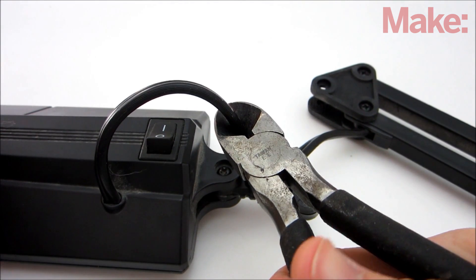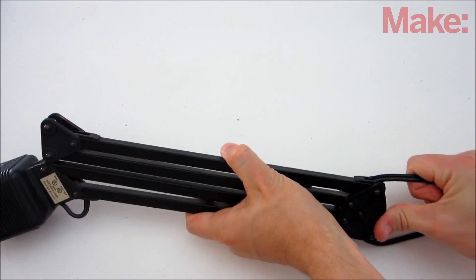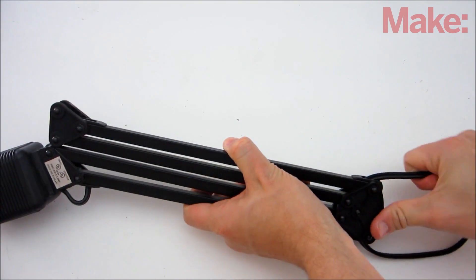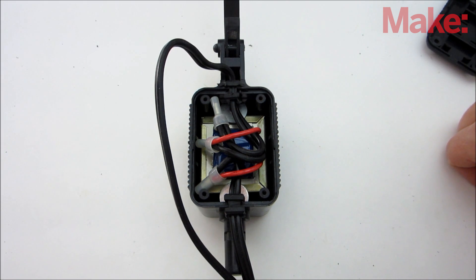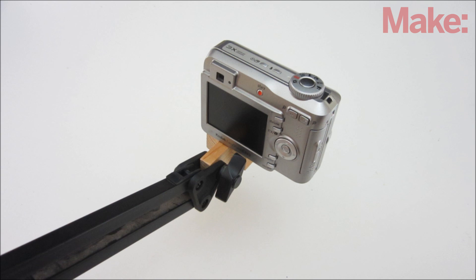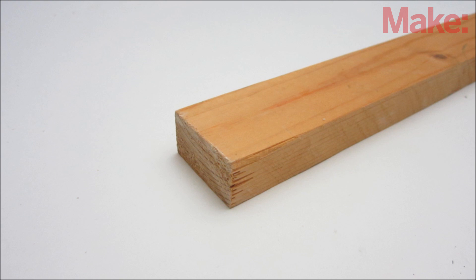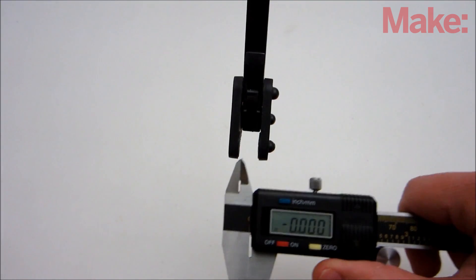If there are any electrical components in the base of the stand, you can either remove those or just cut the cord again. In order to attach your camera, you'll need to make a mounting bracket for it. You can make a really simple one from a small piece of 1 by 2 lumber.